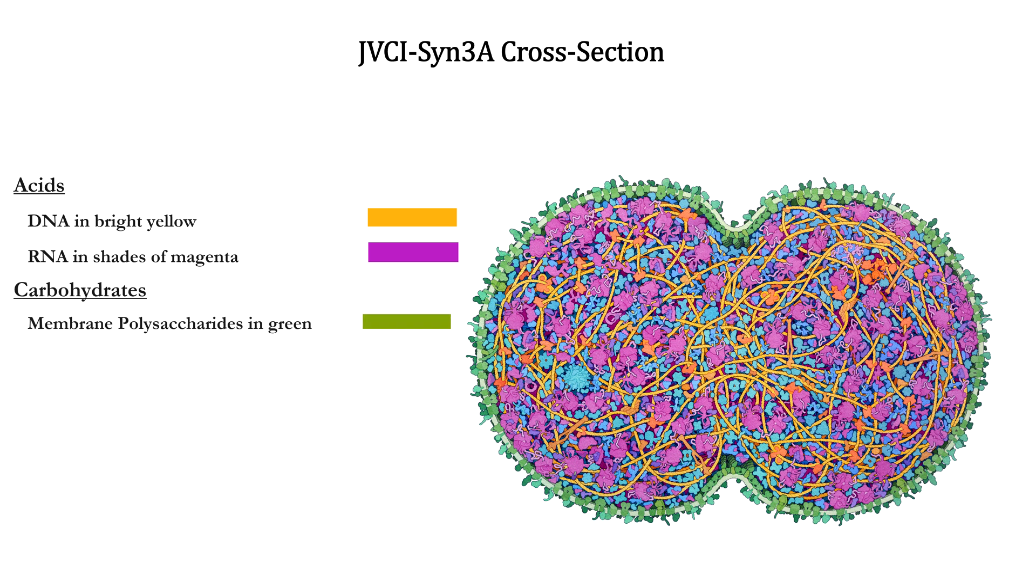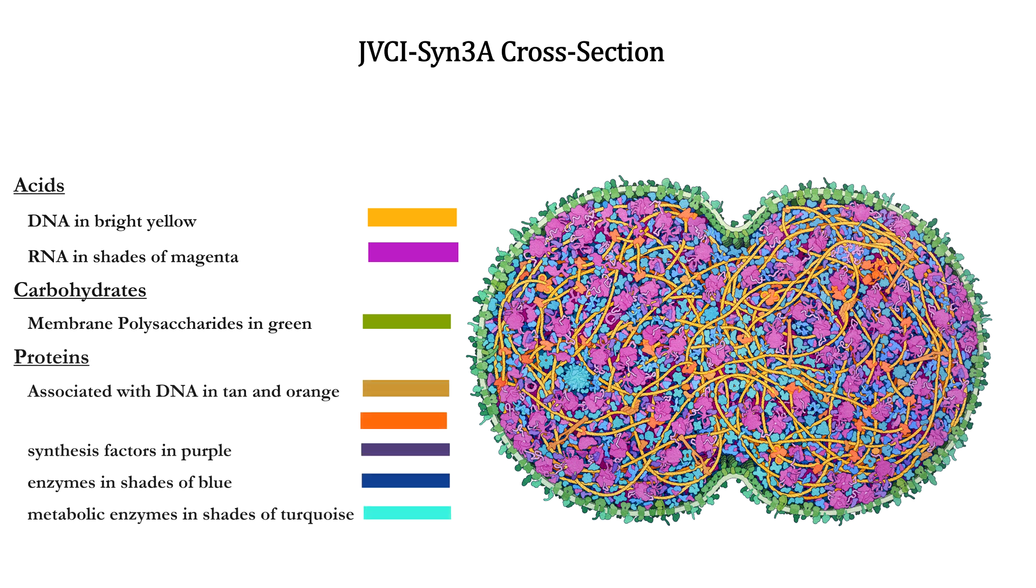For carbohydrates, we have the membrane with some complex carbohydrates like polysaccharides in green. For proteins, we have those associated with DNA in tan and orange, synthesis factors in purple, enzymes in shades of blue, and metabolic enzymes in shades of turquoise.